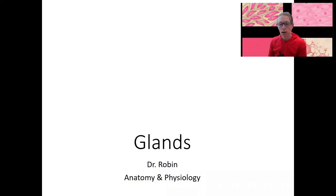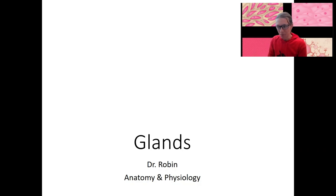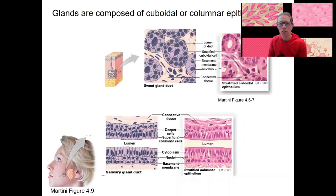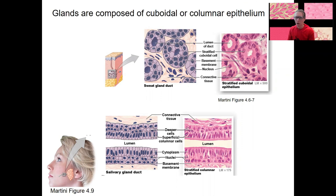We've already talked about glands — endocrine and exocrine glands as part of the endocrine system. Let's go into their tissue types, which you already know from the introduction videos. Glands are made up of, typically — there are a couple of exceptions where they're single cells — cuboidal or columnar epithelium, and typically it's going to be stratified.